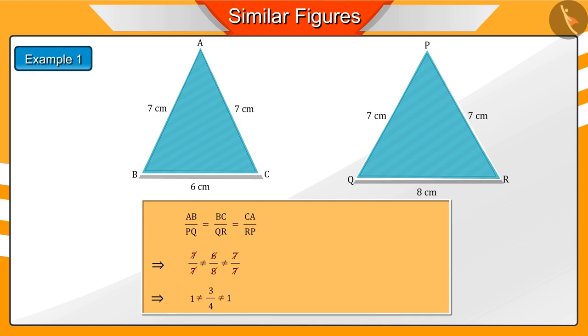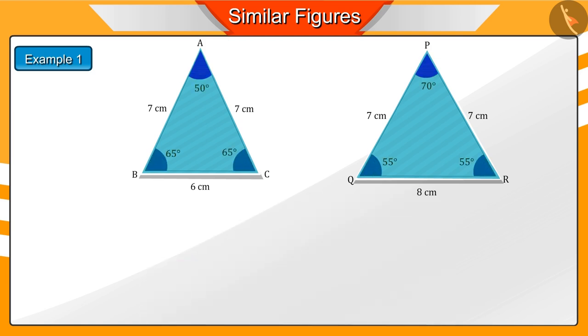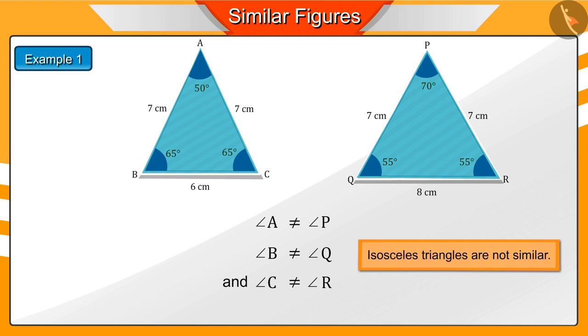These are not equal. That is, the condition of similarity is not being fulfilled. So, they are not similar. If we also look at their corresponding angles, then they are different too. So, the two conditions of being similar here are not satisfied. We can say that here, the isosceles triangles are not similar.